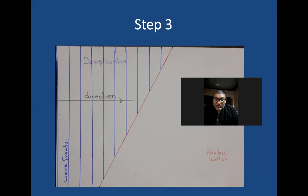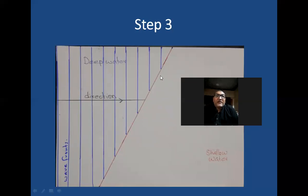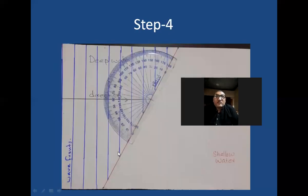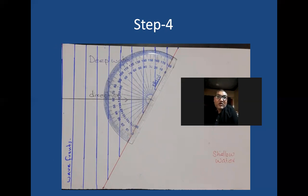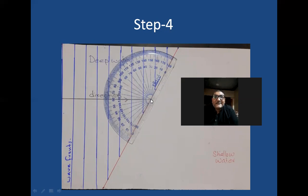Now, the point where the direction line touches the boundary between the deep water and the shallow water is the point of incidence. I will put a protractor here, with the cross of the protractor at the point of incidence, and both the zeros of the protractor aligned on the red boundary. Then I put a dot to mark the 90 degree angle, and I join that dot with the point of incidence — that line is the normal.